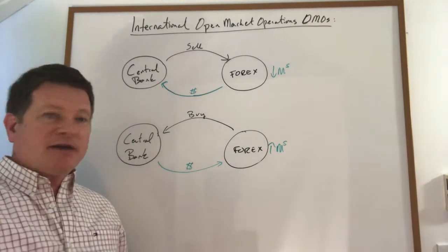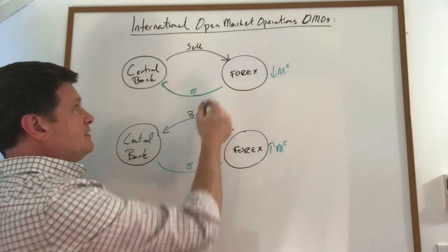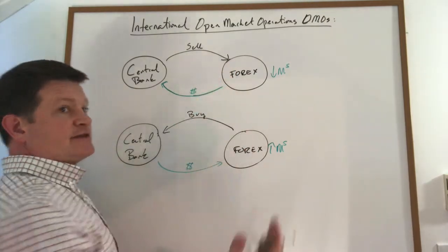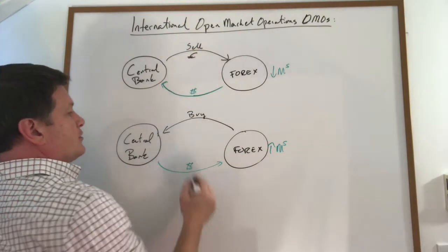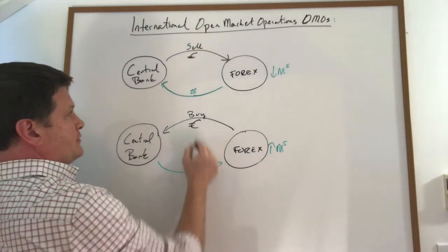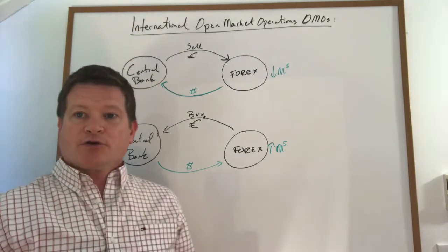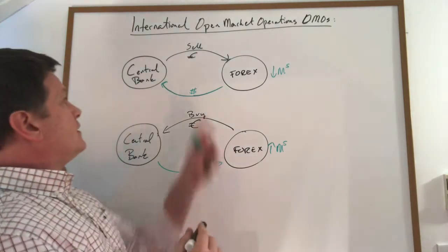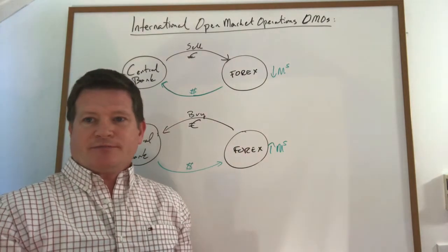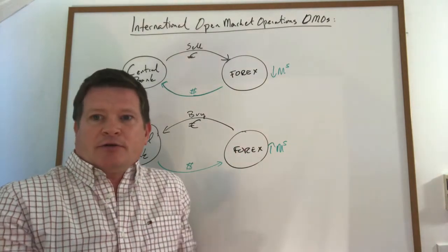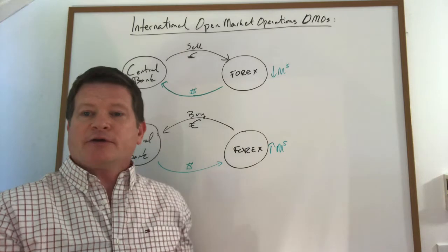And instead of selling a bond, they're selling, let's for example use euros, they're selling a foreign currency or buying a foreign currency. So when they do that, they sell a euro. What do you use when you sell a euro? What do you get? You don't get euros, you get some other currency. You get a dollar.